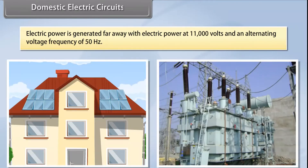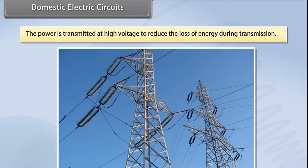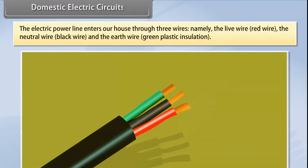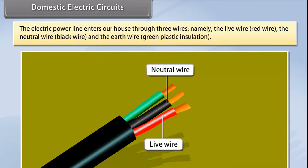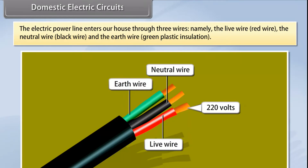Electric power is generated far from the places it is consumed. At the generating station, electric power is generated at 11,000 volts with an alternating voltage frequency of 50 hertz. The power is transmitted to places of consumption at high voltage to reduce energy loss during transmission. The electric power line enters our house through three wires: the live wire (red), the neutral wire (black), and the earth wire (green plastic insulation).